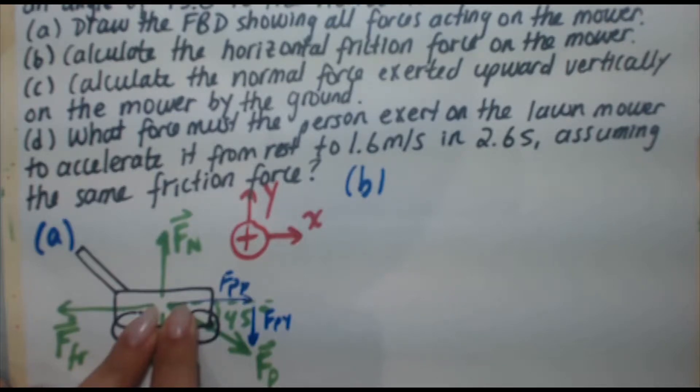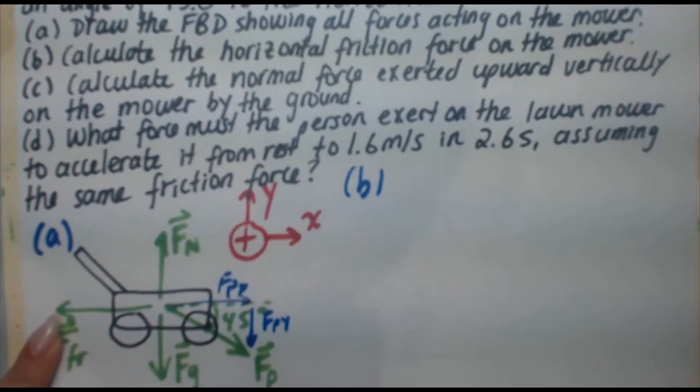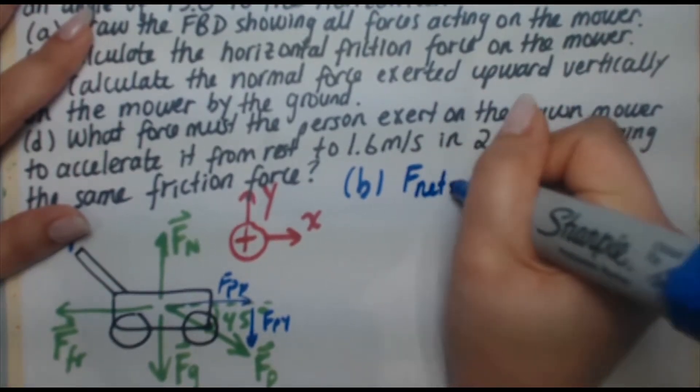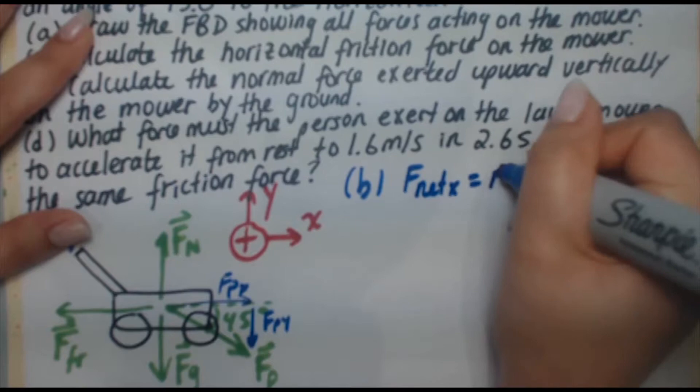Okay, so constant speed means no acceleration. Therefore, all forces in the x direction must cancel. They must balance each other. So therefore, we're saying that this force here must be equal in magnitude to that force there. Okay, so let's take a look.